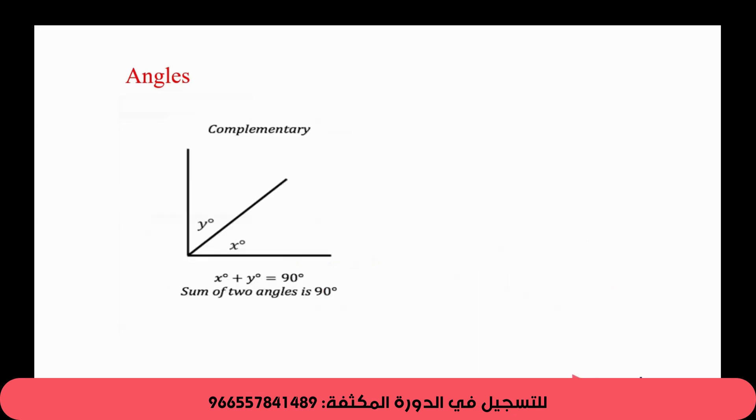If two angles can be added up to 90 degrees, we call them complementary. If they add up to make a straight line or 180 degrees, we call them supplementary. This is from secondary school or some of you had it in elementary school.